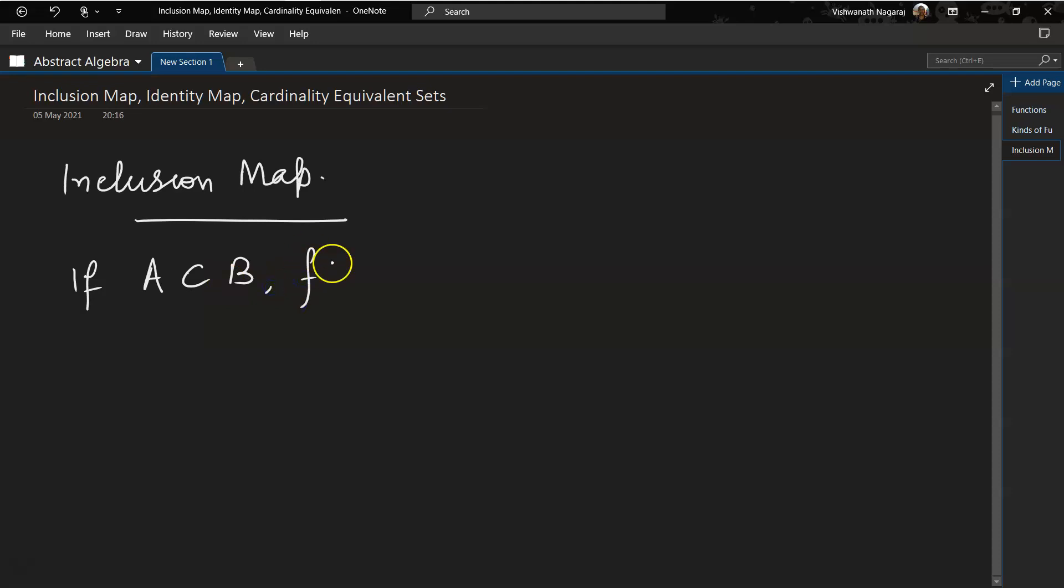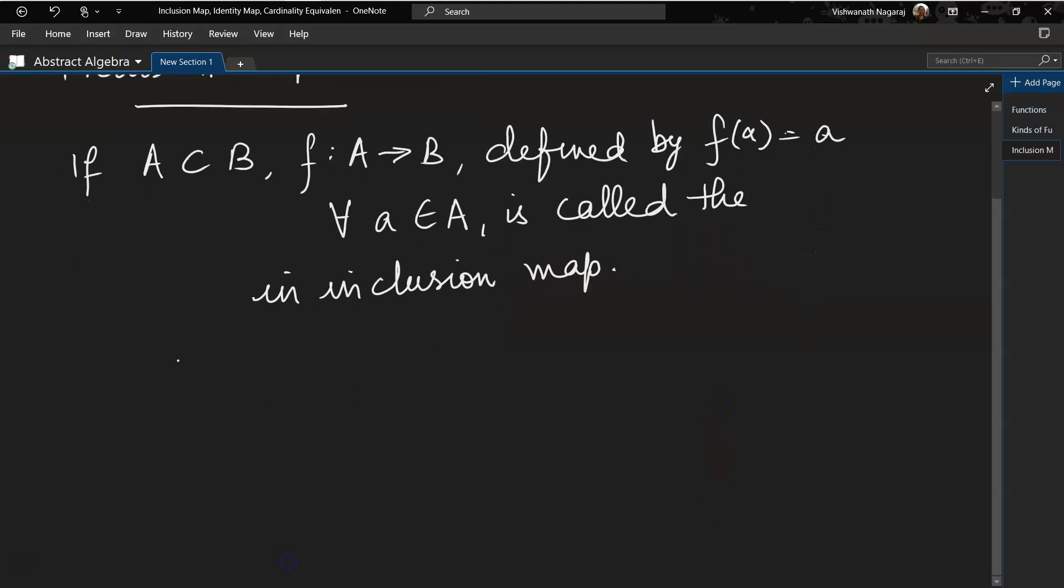and a function from A to B defined by f(a) equals a for all a belonging to set A is called the inclusion map. What does this mean? It basically means that inclusion map is another way of saying that every element in A is also an element of B.